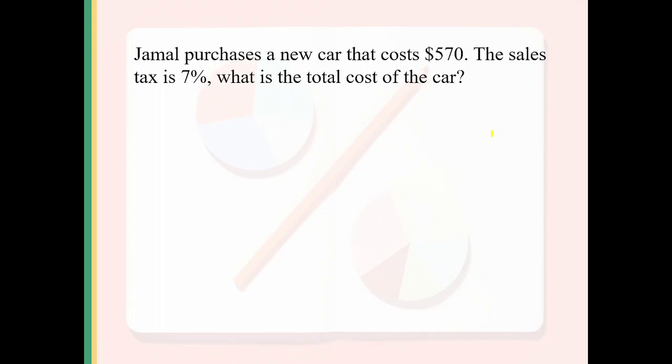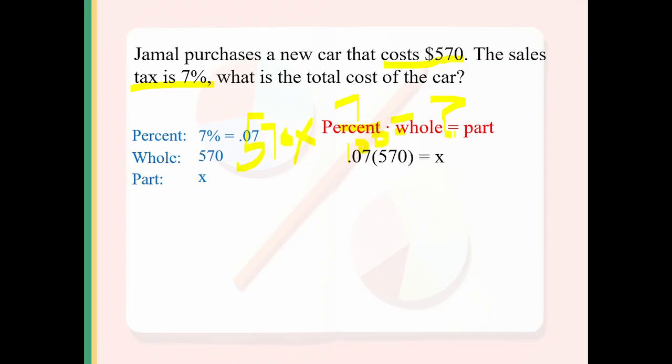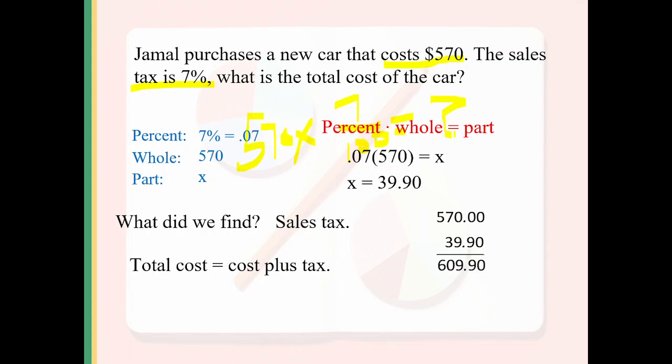Here's a good real-time question. Jamal bought a car for $570. Sales tax is 7%. He calculated that 7% of 570 dollars - that's 7 over 100 times 570 - equals $39.90 tax. This is not the final answer because the total cost has been asked. Add it to the actual cost: $570 plus $39.90 gives you $609.90. That's the total cost.